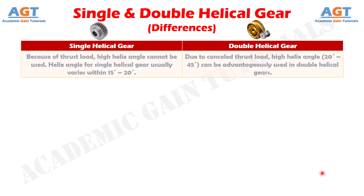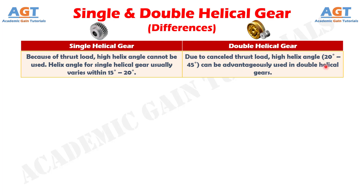Number 6: in single helical gears, because of thrust load, high helix angle cannot be used. Helix angle for single helical gear usually varies within 15 to 20 degrees. Whereas, due to cancelled thrust load, a high helix angle of around 20 to 45 degrees can be advantageously used in double helical gears.